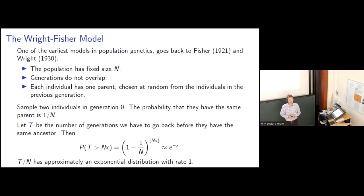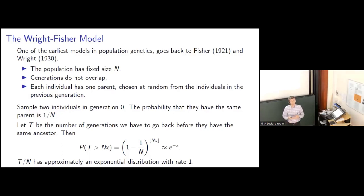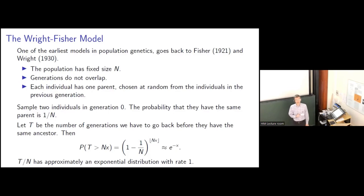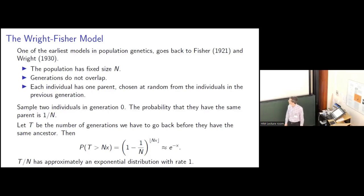Each individual independently chooses its parent uniformly at random from the individuals in the previous generation. We're going to be interested in understanding the genealogical structure of populations, so we want to imagine taking a sample of individuals from the population at some time and following their ancestral lines backwards in time. Let's just imagine sampling two individuals from the Wright-Fisher model in generation zero. Because they choose their parents independently and uniformly at random, the probability that they choose the same parent is one over N.